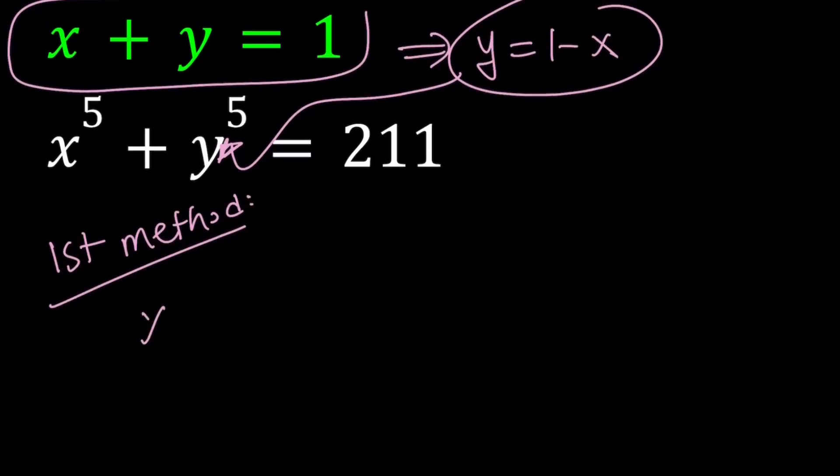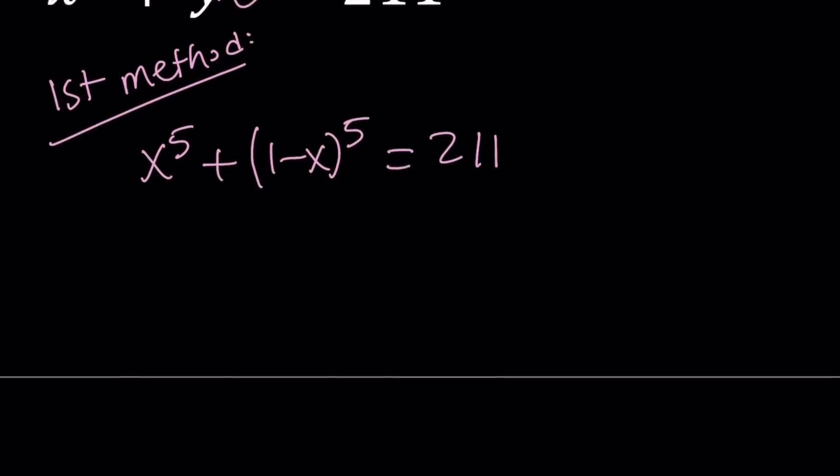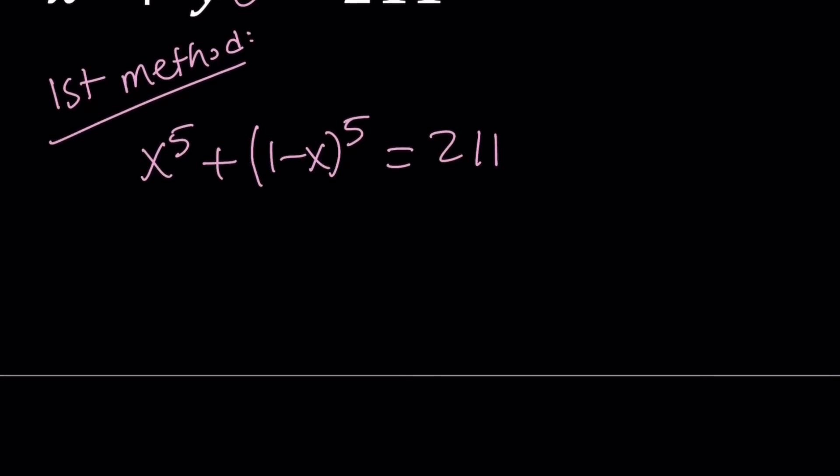So we get x to the 5th plus 1 minus x to the 5th equals 211. Is this going to give us a quintic equation? The answer is no. It's going to be quartic because x to the 5th minus x to the 5th, they're going to cancel out. But to keep a long story short, if you expand it, add it all up, simplify it, you're going to get the following: 5x to the 4th minus 10x cubed plus 10x squared minus 5x minus 210 equals 0.